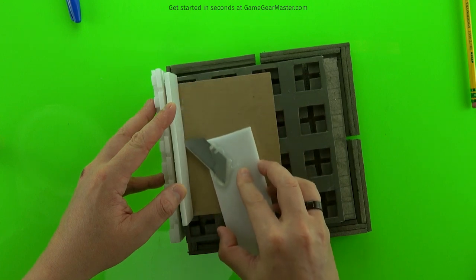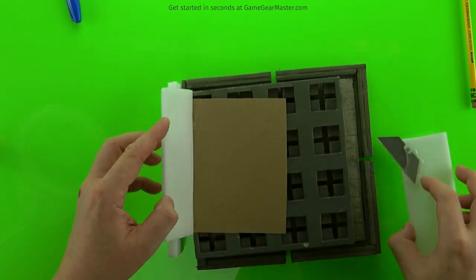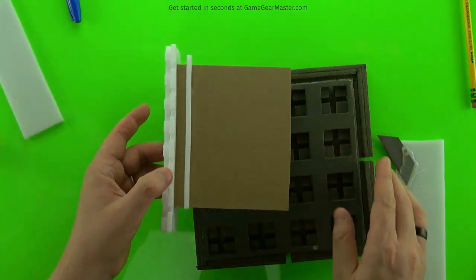Because we want that little piece of foam strip there to only be the height of one sheet of foam board. So we use our single sheet depth cutter to do that.